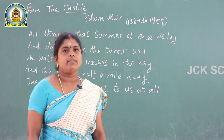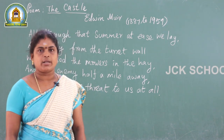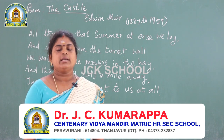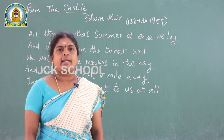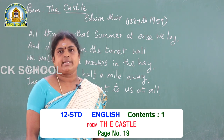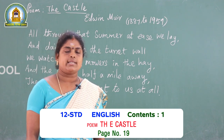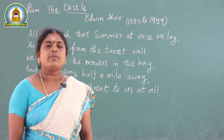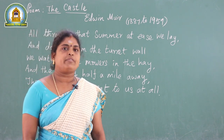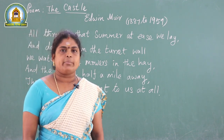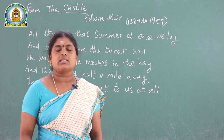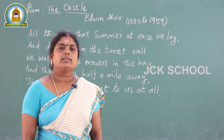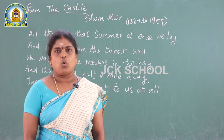Welcome students. Now I am going to take a poem, 'The Castle,' written by Edwin Muir. His period is 1887 to 1959. He was a Scottish poet, novelist, translator, and a critic. He was well known and remembered for his vivid poetry — vivid poetry means he tells his opinions and thoughts very strongly. His other famous poems are 'The Private Palace' and 'The Voyages.'